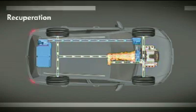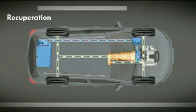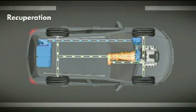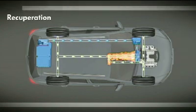When the driver brakes, the new Touareg hybrid makes use of the braking energy. The electric motor then works as a generator and converts kinetic braking energy into electrical energy. This is stored in the high voltage battery and is available to the driver the next time the car starts off.